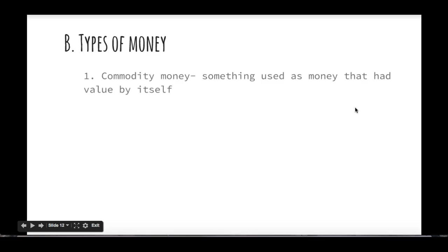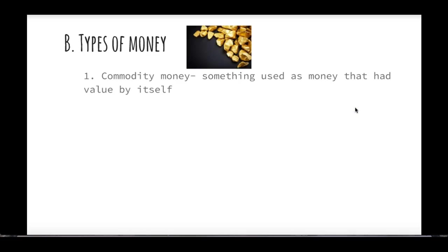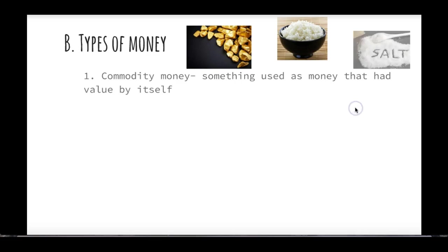The first type of money was called commodity money — basically anything used as money that has value by itself. Lots of examples: gold has been used as commodity money, rice has been used as commodity money, salt, cacao beans — the beans used to make chocolate — and cigarettes in prisons. These are all things that by themselves have value, could be used for a variety of purposes, but are being used to actually trade for things.